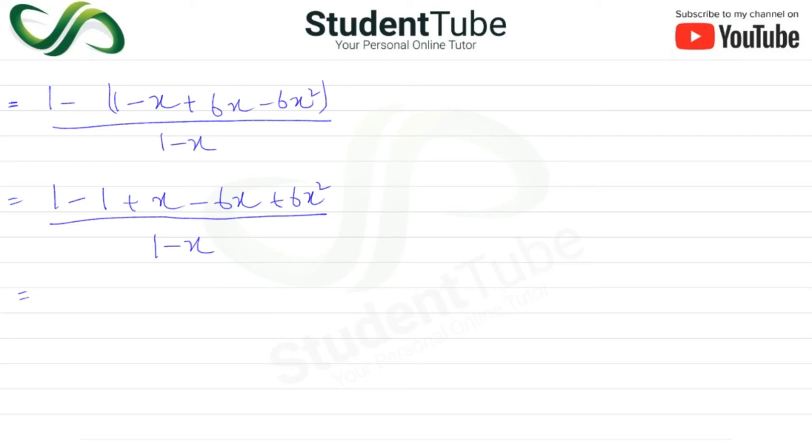Now we can cancel. 1 to 1 cancels. We have 6x squared and minus 5x. Then below we have 1 minus x. Answer.